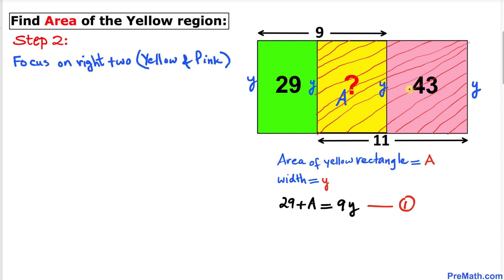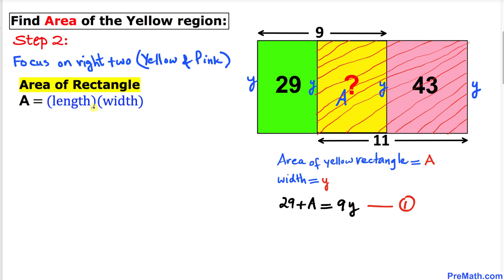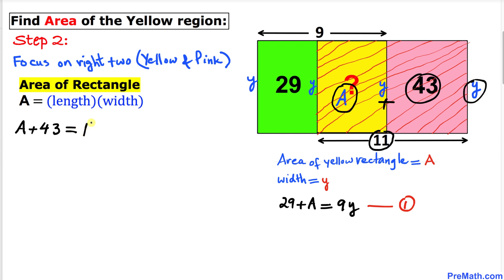Now let's focus on the two rectangles on the right — yellow and pink combined. The area of a rectangle is length times width, so the combined area is A plus 43, equal to length 11 times width y, giving us: A + 43 = 11y. Let's call this equation number two.